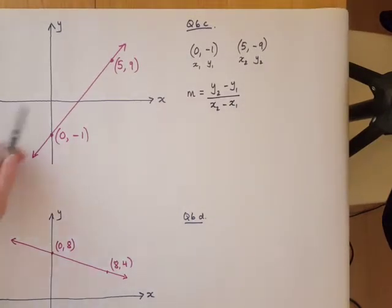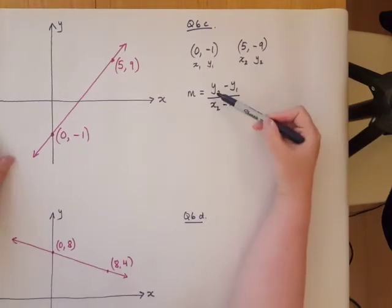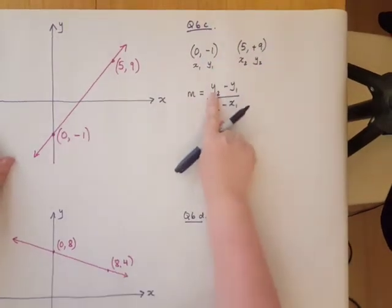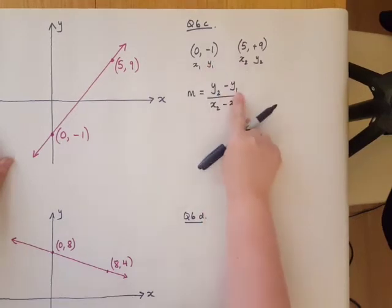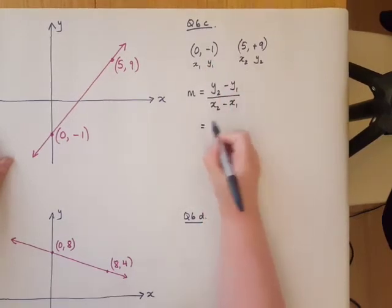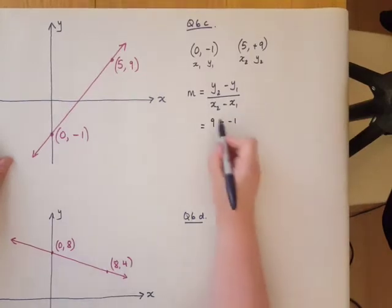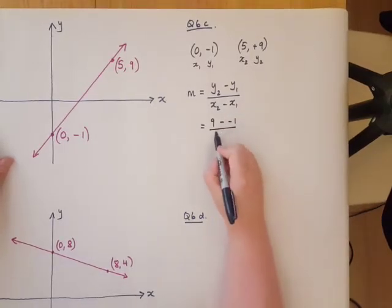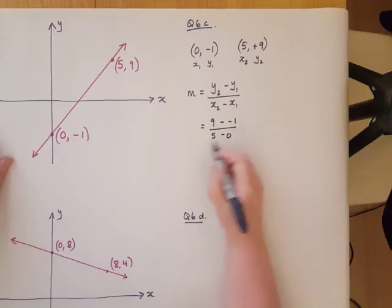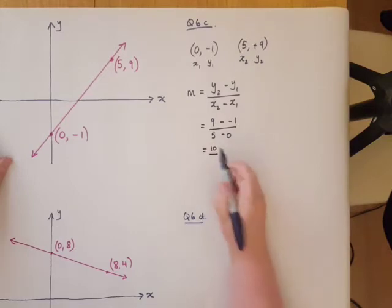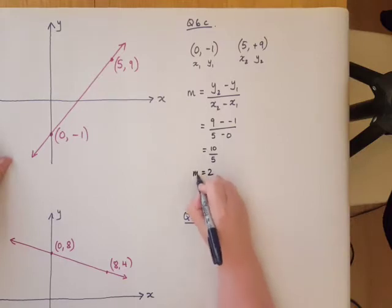Now I'm going to replace the numbers, so y2 goes here and y1 goes there. So 9 minus negative 1 and 5 minus 0. So that becomes 10. 5 take 0, that's 5. 10 divided by 5, the gradient is 2.